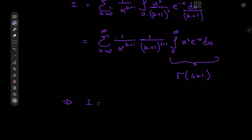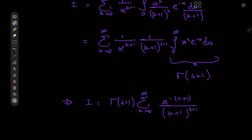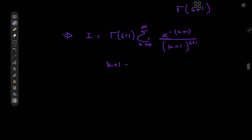So we have k plus 1 to the s in the denominator of the integrand, and that is of course independent of the variable with respect to which we're integrating. So we'll take it outside the integration operator. We have 1 by alpha to the k plus 1 times 1 by (k plus 1) to the s plus 1 times the integral from zero to infinity of u to the s times e to the negative u du, which we recognize as our good old pal the gamma function evaluated at s plus 1.